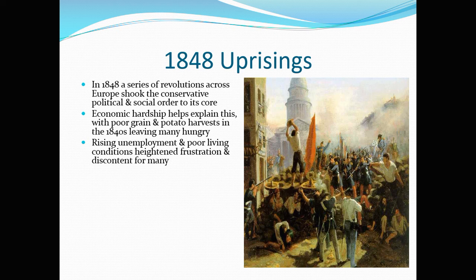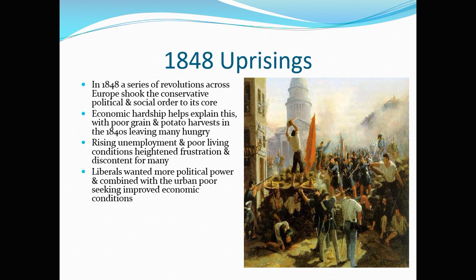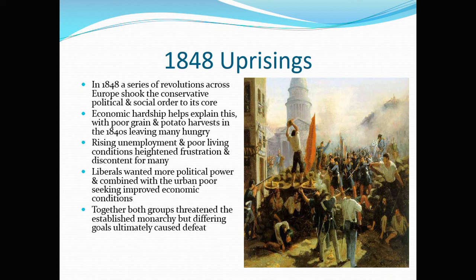There was also rising unemployment because of an economic downturn in the 1840s, and poor living conditions, so people were frustrated and discontent. In 1848 we have a combination of two different groups leading the revolution: the working classes of the cities and the poor people of the countryside, allied with liberals who want more political power. Some liberals are also nationalists who either want to unite and create new states, or want their states to break away from bigger kingdoms. So you have poor people who want economic change, and liberals and nationalists who want political change — combined they bring about a series of revolutions. However, the fact that there are two or three different goals for these different groups means they're not fully united, and this ultimately causes their defeat.